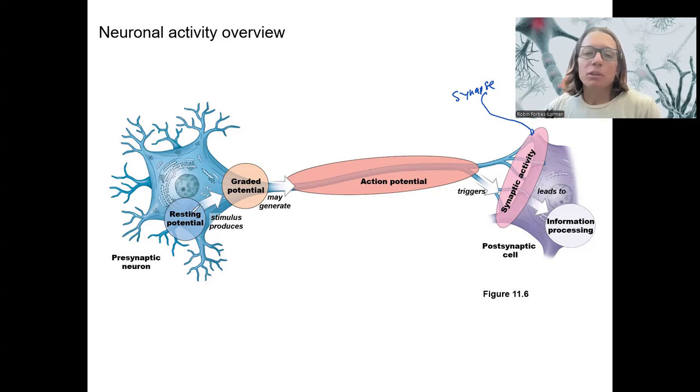So we'll be going through, we've talked about the resting potential already. Review that more if you need to. We're going to start by talking about graded potentials. Graded potentials are also called local potentials. They're happening in the dendrites and cell body. Anywhere prior to the axon hillock.